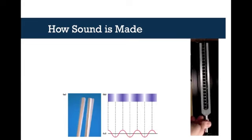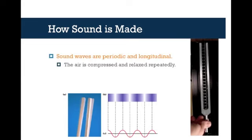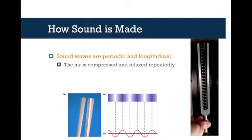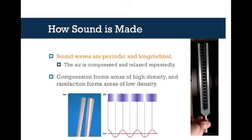Sound waves are periodic, meaning they occur over and over again, and they're longitudinal. Longitudinal waves are the same as compression waves or density waves from chapter 12, so you can see these areas of high and low density. If you look at the graph below, that's what sound waves tend to look like — compression forming those high density areas and rarefaction forming those low density areas.